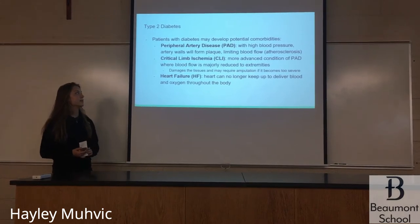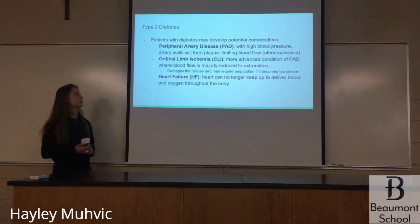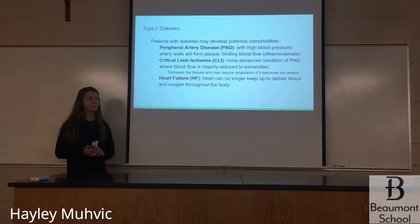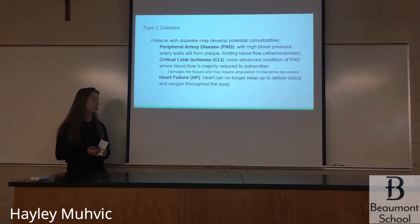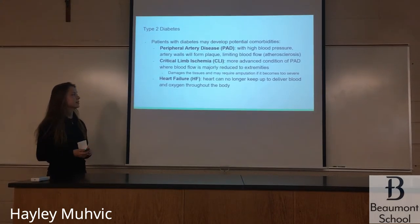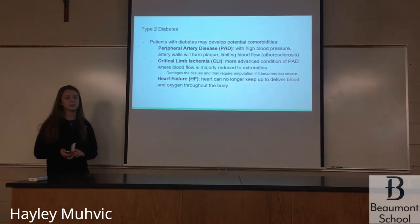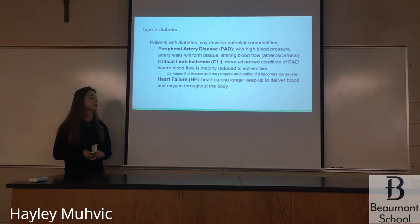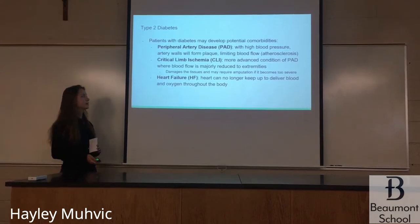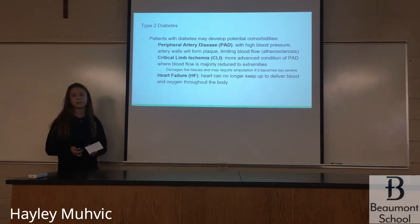Patients with type 2 diabetes may develop potential comorbidities. The first is peripheral artery disease: with high blood pressure, artery walls start to form plaque, limiting blood flow — that's called atherosclerosis. A more advanced condition is critical limb ischemia, where blood flow is majorly reduced to the extremities, damaging the tissues and potentially requiring amputation. Heart failure is another comorbidity, where the heart can no longer deliver blood and oxygen throughout the body.